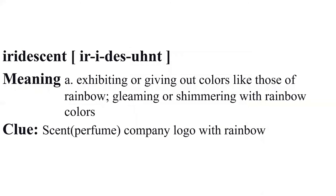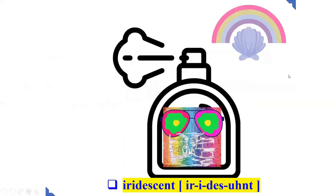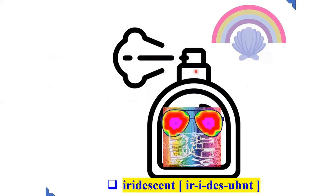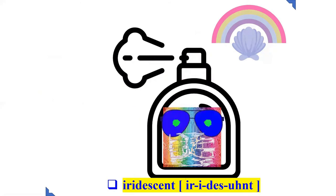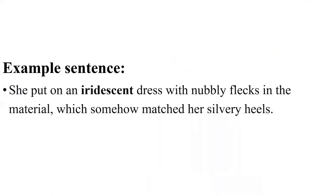Iridescent – Exhibiting or giving out colours like those of a rainbow, gleaming or shimmering with rainbow colours. Clue – Scent company logo with rainbow. Visualize – This scene was adopted as a logo for a famous scent product, shimmering like a rainbow. Iridescent is an adjective that means lustrous and pearly, giving off a brilliant sheen like an oil slick, a pearl, or a rainbow-like sheen that changes colour in the light.